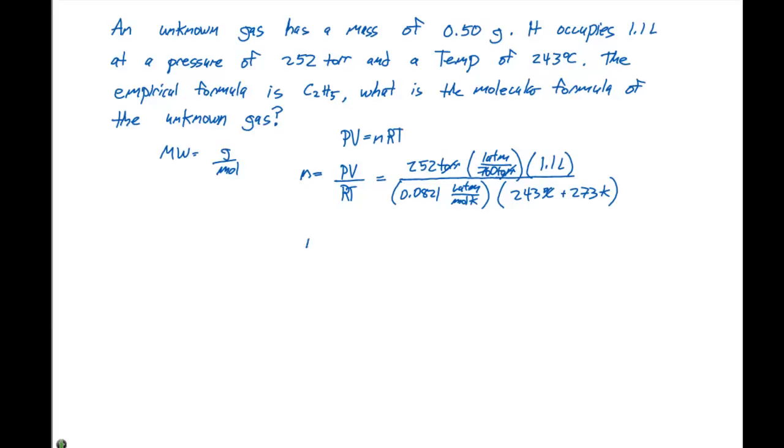If we solve for n, we get 0.0086. The torr units cancel, the atmospheres cancel with our R constant, the liters cancel with the R constant, and the Kelvin cancels with our R constant. We have moles to the minus one in the denominator, so when we flip that up to the numerator, our units are in moles. So we have 0.0086 moles.